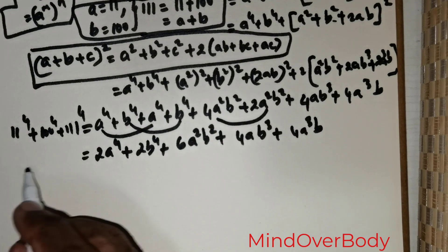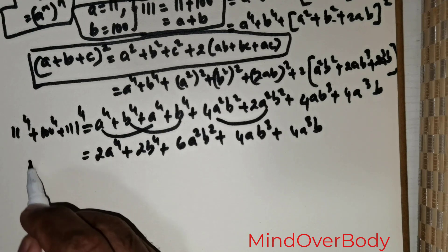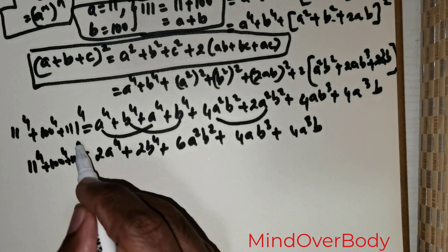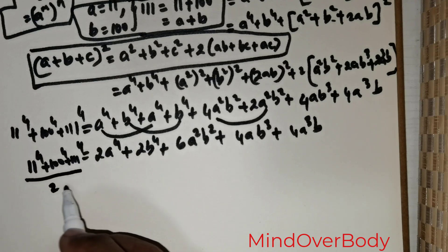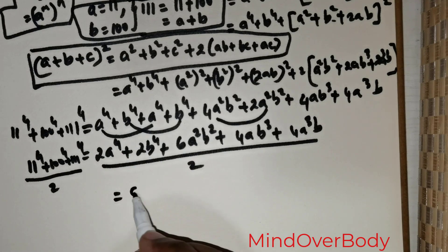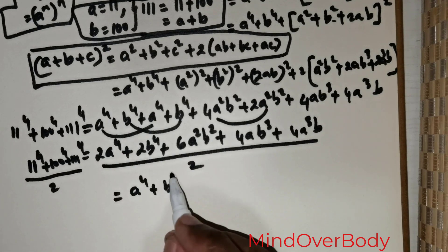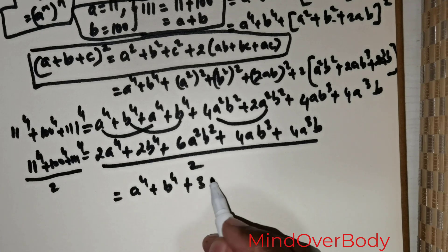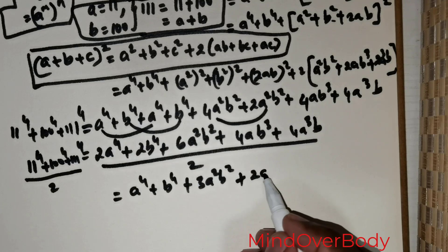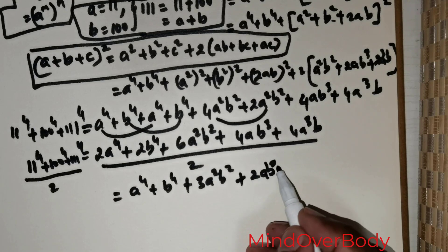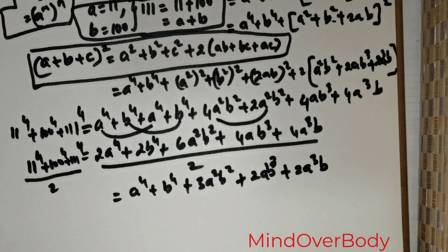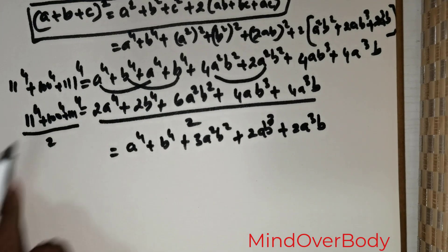Now I would be dividing both sides by 2. So this means I have 11 raised to the power 4, positive 100 raised to the power 4, positive 111 raised to the power 4, divided by 2, and this entire right-hand side divided by 2. So this can be rewritten as A raised to the power 4, positive B raised to the power 4, positive 3 times A squared B squared, positive 2 times A cubed B.